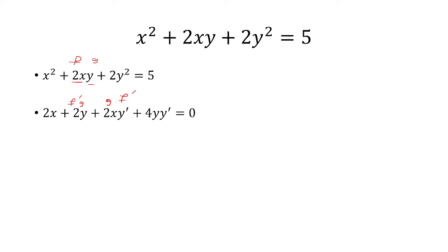And then the derivative of 2y squared is just 4y times y prime. And that's equal to 0 since the derivative of 5 is 0. Now we can factor out a y prime from the third and the fourth term. We're left with 2x plus 4y.